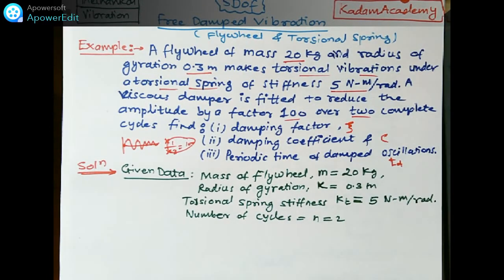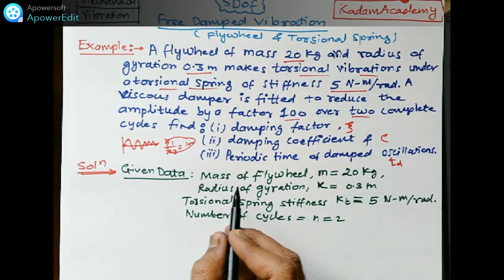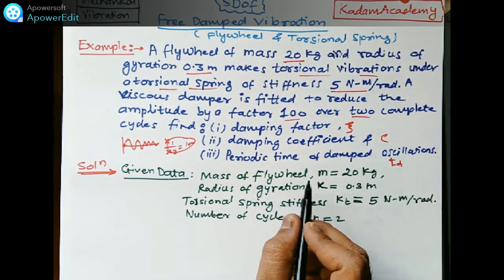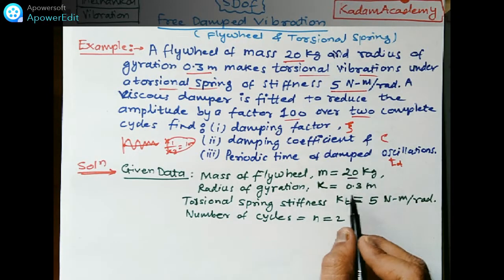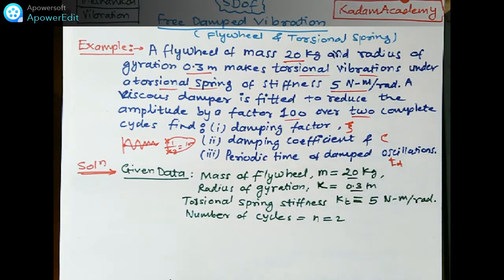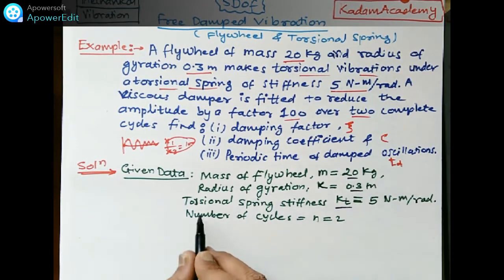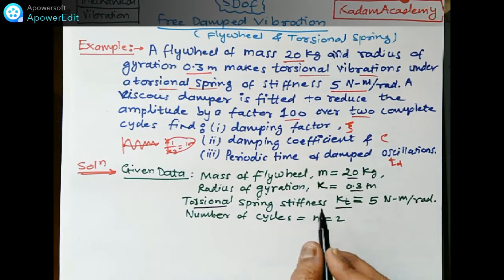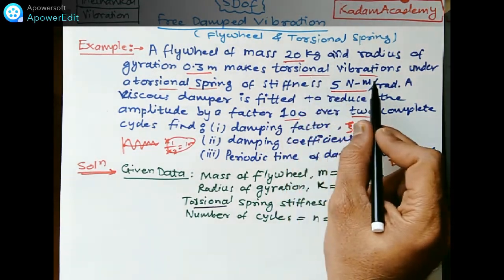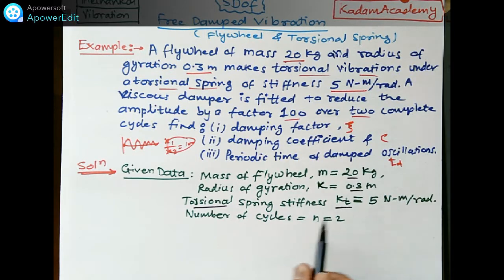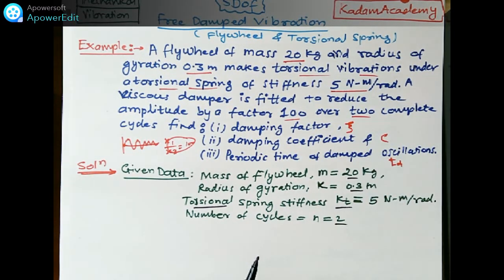Given data: mass of flywheel m = 20 kg, radius of gyration k = 0.3 meter, torsional spring stiffness = 5 newton-meter per radian, and number of cycles n = 2. We need to find the damping factor, damping coefficient, and damped periodic time.